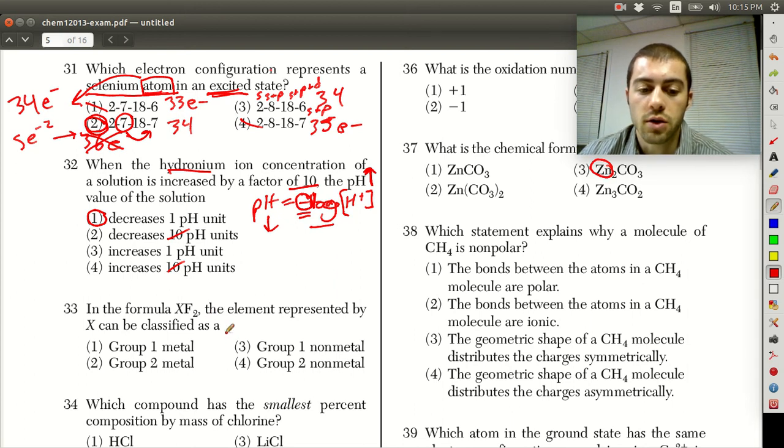Looking at question 33, if we have a formula XF2, the element represented by X could be what? Right off the bat, group 1 and group 2 are metals. So we can take answer choices 3 and 4 out because they're saying that group 1 and group 2 are non-metals when we already know that they're metals.